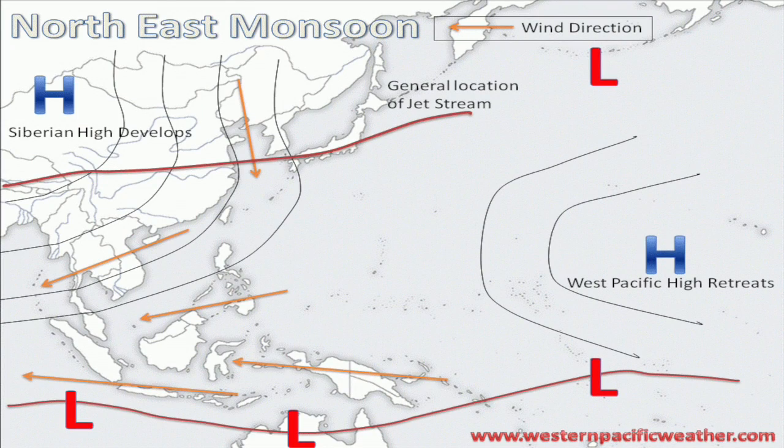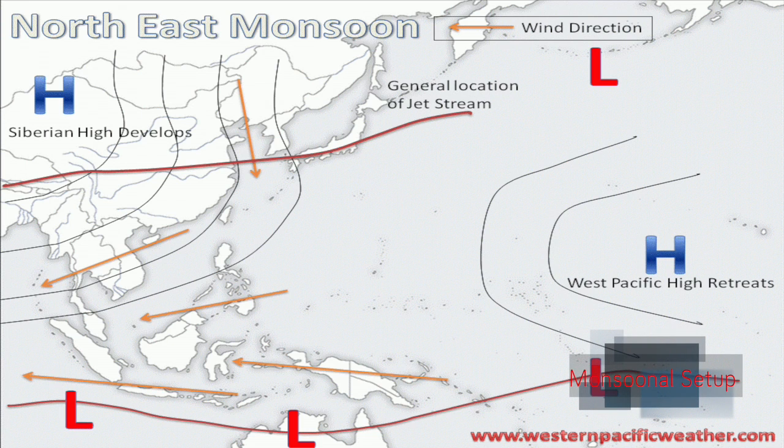Let's start off talking about the winter months and specifically starting around the month of January, where the northeast monsoon is already in full swing. Basically what you have going on is the cold Siberian high is continuing to dominate much of eastern China and eastern portions of Russia.